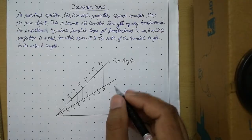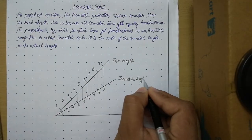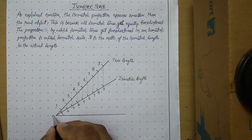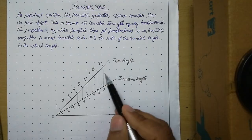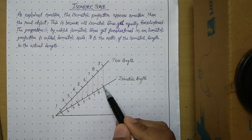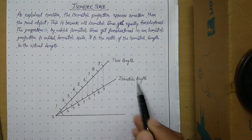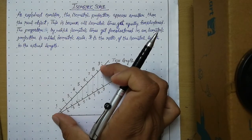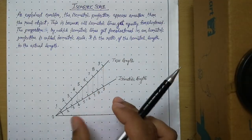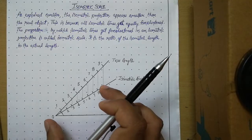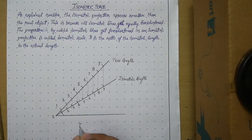We call this particular length on the 30 degree line the isometric length. Let us mark the origin as 0. If 0 to 9 on the true length represents actual 9 cm, then from each marking we dropped a vertical line onto the 30 degree line to get the corresponding point. So the length 0 to 9 on the isometric scale is 82% of the actual. We call this the isometric length, and this scale is the isometric scale.